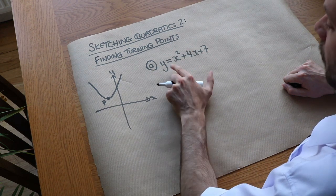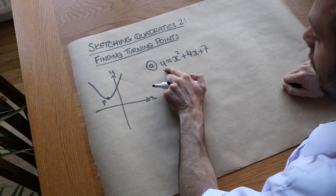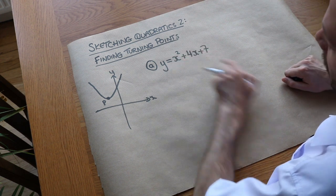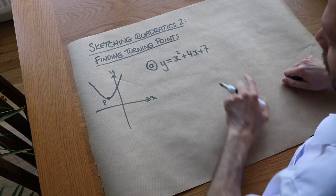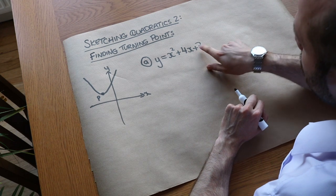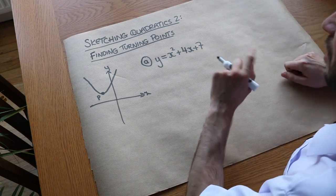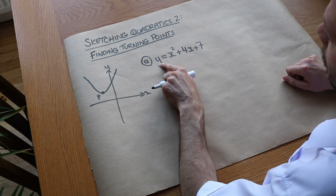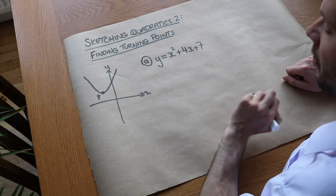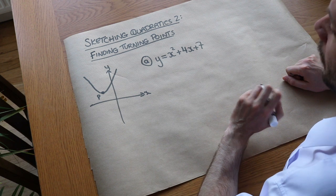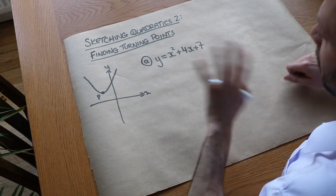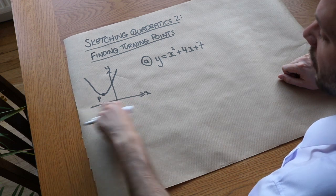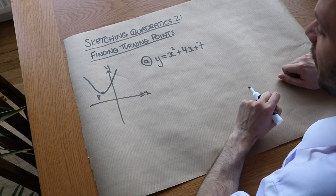For this example, if we made y equal to zero — that's how you find the x-intercepts — and we attempted to factorise it, it would fail because we can't find two numbers which add to give four and multiply to give seven. Even if we tried to use the quadratic formula, it would fail because we'd end up square rooting a negative number, which means the graph never actually intercepts the x-axis.